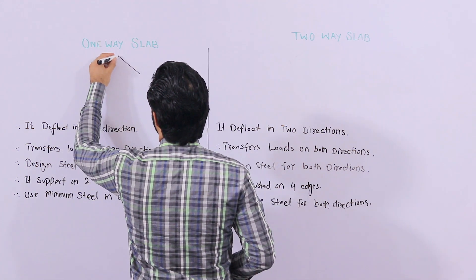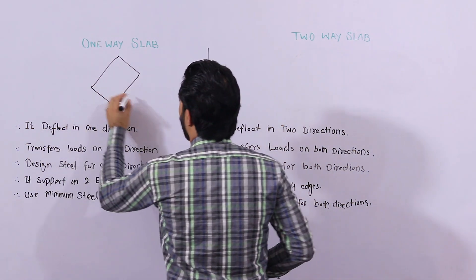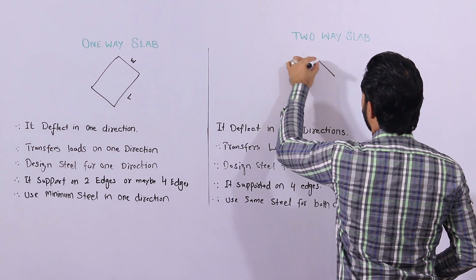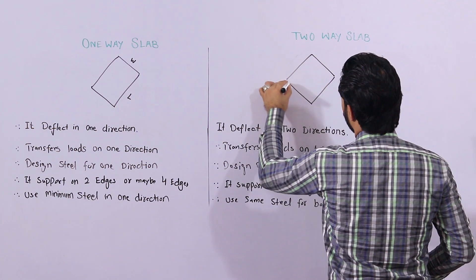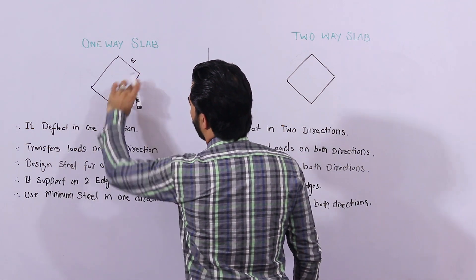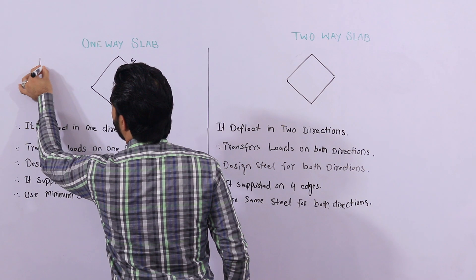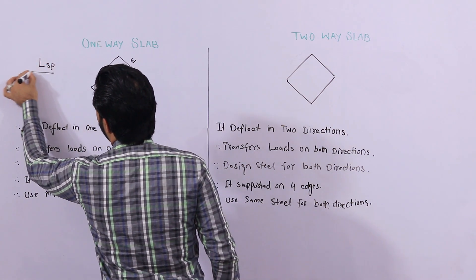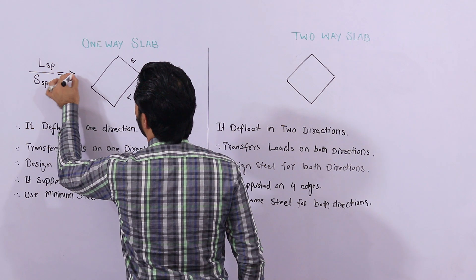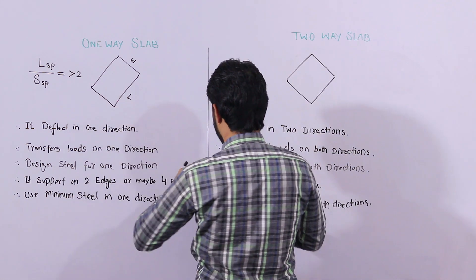Suppose this is a slab. This is its length and this is its width — the longer span and the shorter span. How we will know one-way slab? When we divide the longer span by the shorter span and we get a value greater than or equal to two, this is called a one-way slab.